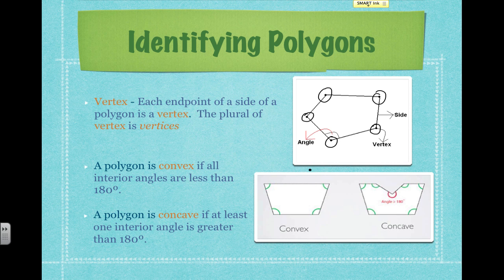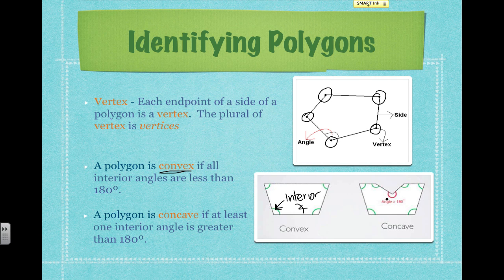Now we're going to learn about different types of polygons. A polygon is considered to be convex if all of the interior angles — the angles inside the polygon — are less than 180 degrees. So this is a convex polygon. This polygon is a concave polygon because we have at least one angle that is bigger than 180 degrees. We can see that this angle right here is larger than 180 degrees. So basically, if the polygon indents into itself, then it's going to be a concave polygon.